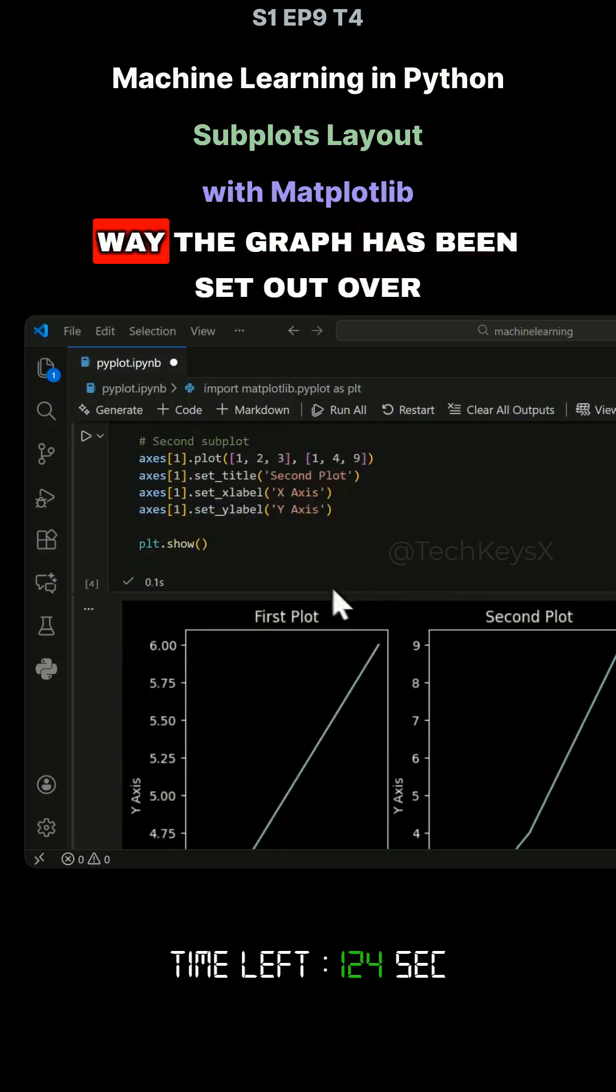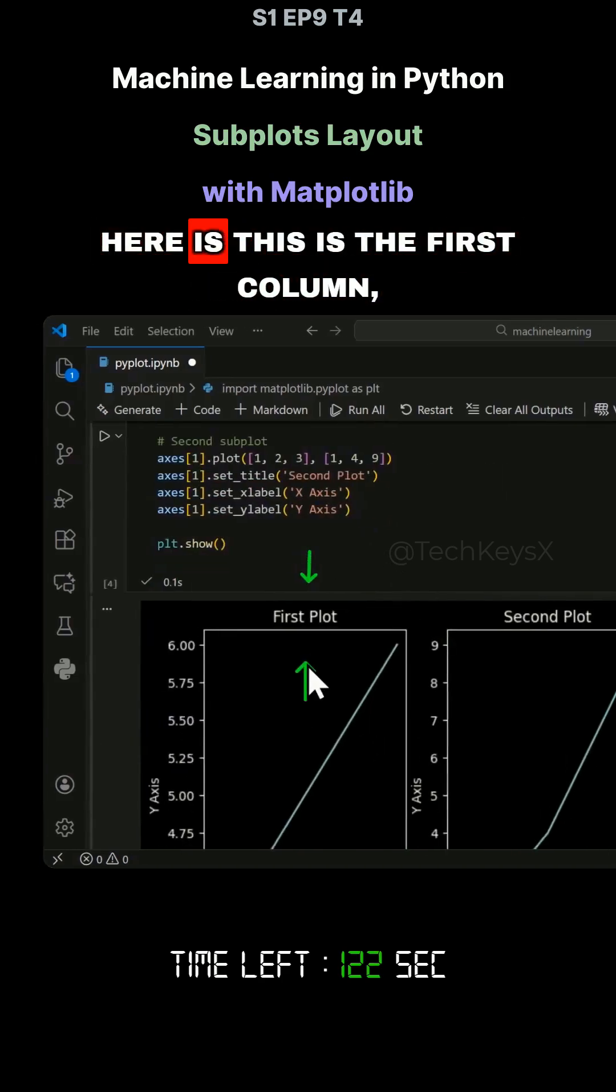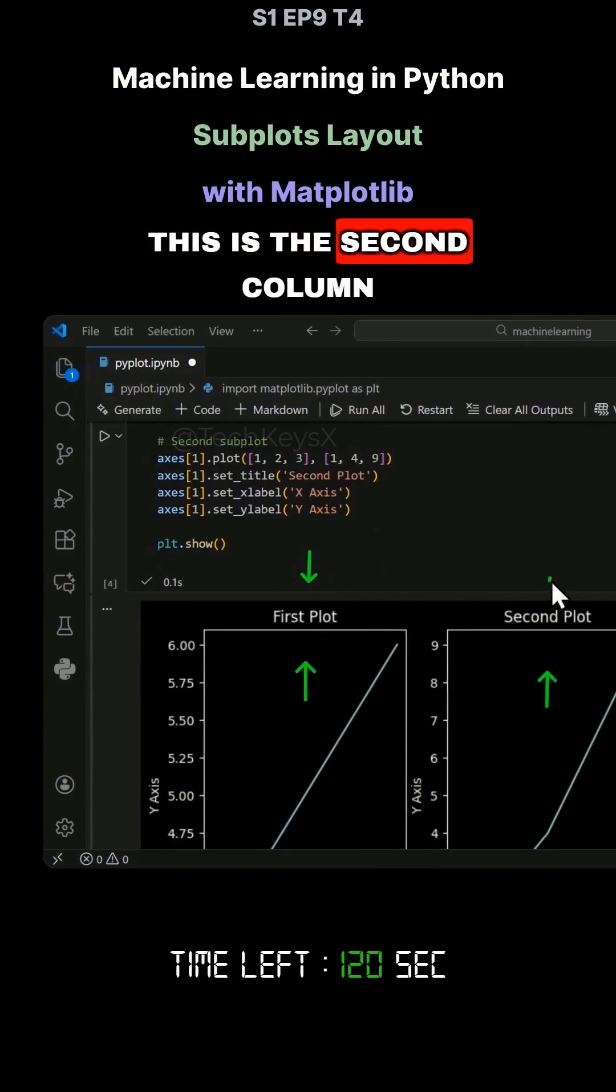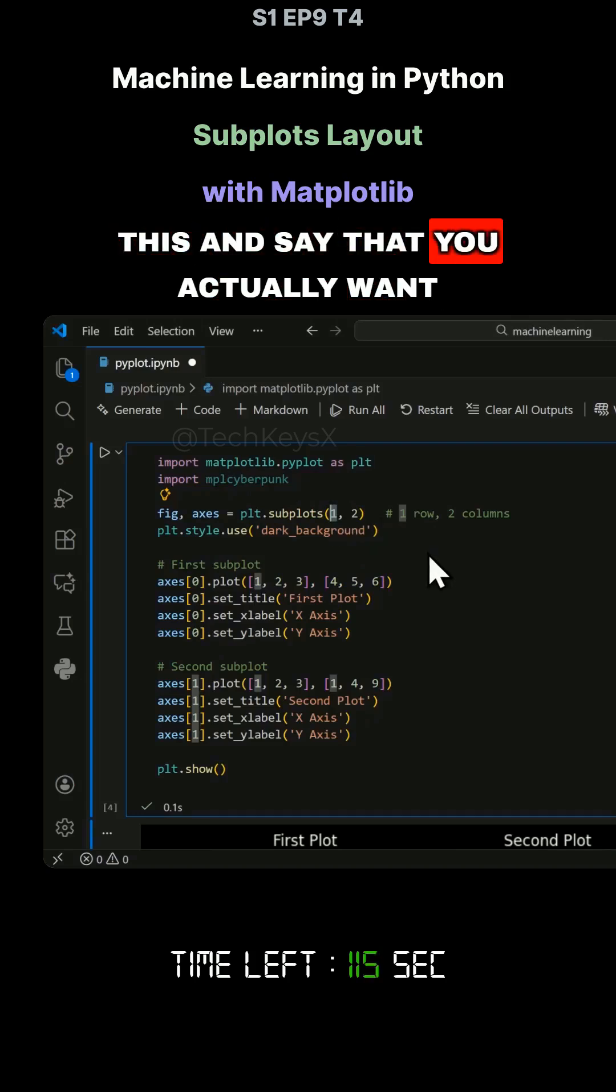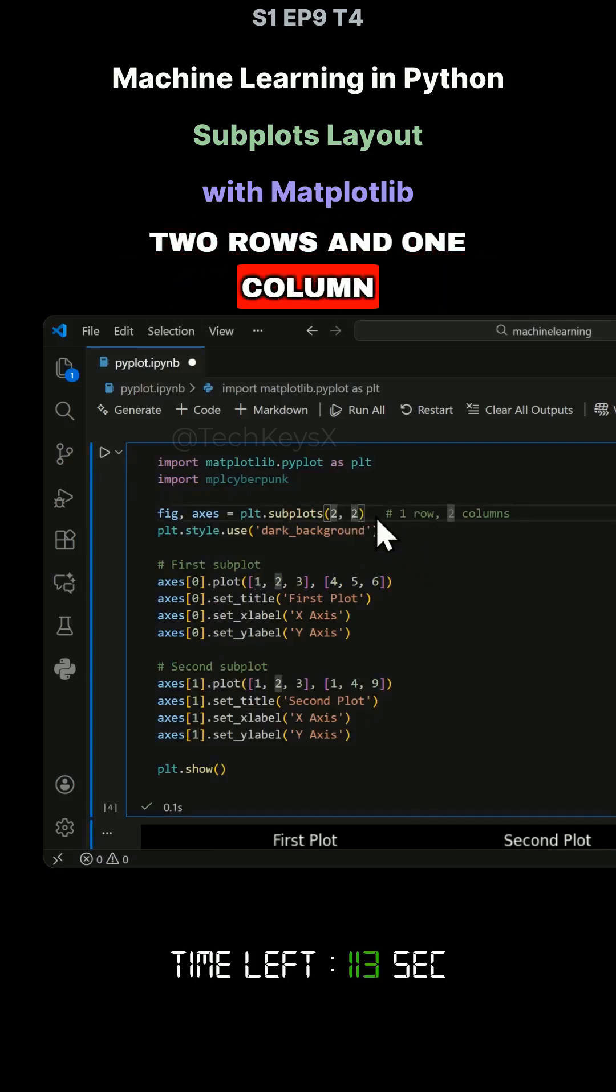So in this instance, you can see the way the graph has been set out. This is the first column, this is the second column. It puts them side-by-side. But what you can do is tweak this and say that you actually want two rows and one column.